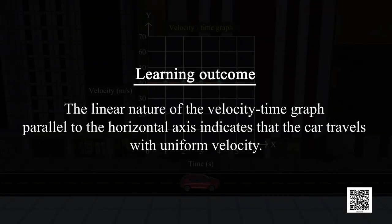Learning outcome: Here, in this case, the linear nature of the velocity-time graph parallel to the horizontal axis indicates that the car travels with uniform velocity.